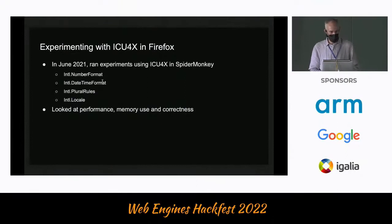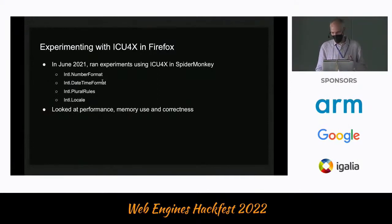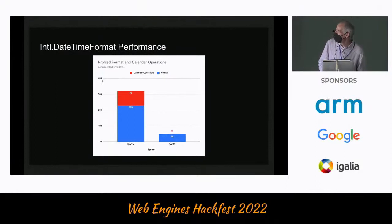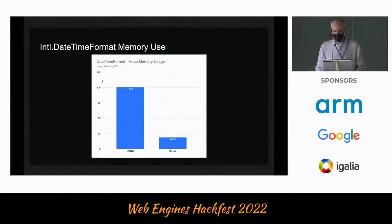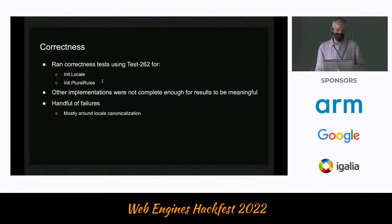About a year ago, we ran some experiments with ICU4X inside Firefox and SpiderMonkey. We chose four APIs: number format and date format, because those are probably the two most significant use cases, and plural rules and locale, because at that time those implementations inside ICU4X were the most complete. We looked at performance, memory use, and correctness. For datetime format, we ended up with something significantly faster and using quite a bit less memory — that was very promising. We also ran correctness tests using Test262, but just for locale and plural rules, because at the time the implementations of number format and datetime format weren't complete enough in terms of supported options for the results to be meaningful. We ended up with only a handful of failures, mostly around locale canonicalization.